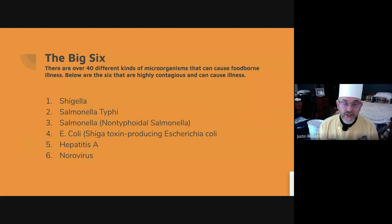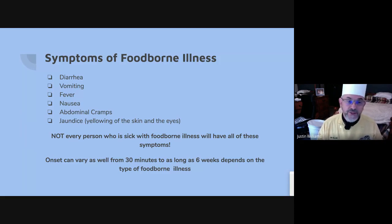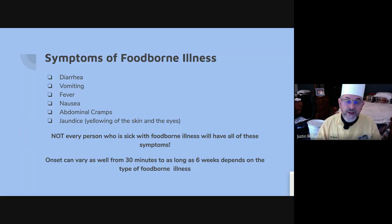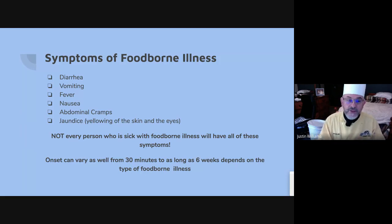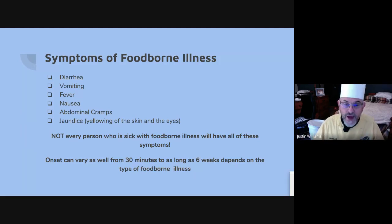Salmonella Typhi is usually transferred through drinks and water. Symptoms of foodborne illness include diarrhea, vomiting, fever, nausea, abdominal cramps, and jaundice — which is the yellowing of the skin and eyes, like the white part of the eyes. Not everybody will have the same symptoms, and the onset can take between 30 minutes and six weeks, depending on what you've eaten and how your body handles it. Some people will eat it and feel only a little discomfort; others will get really sick.